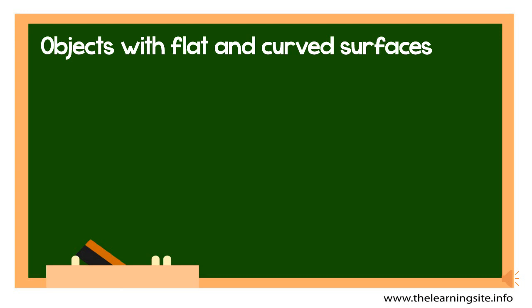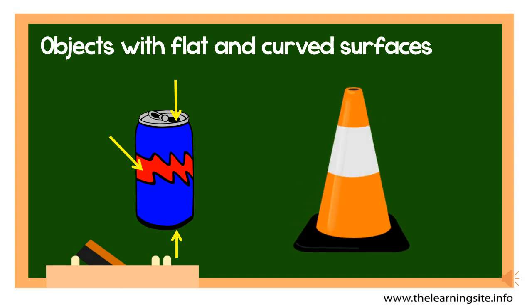Most things in real life are in fact made of both flat and curved surfaces. Look at the soda can. The bottom and the top of the can are flat surfaces. The body of the can is a curved surface. Now look at the traffic cone. Can you find the flat surface and the curved surface?